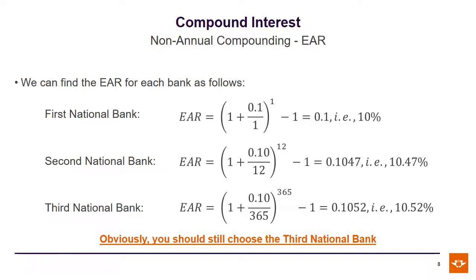The Third National Bank, whose compounding period is daily, its effective annual rate is 10.52%. So the bank that offers you or offers us the best return is the Third National Bank with the daily compounding.